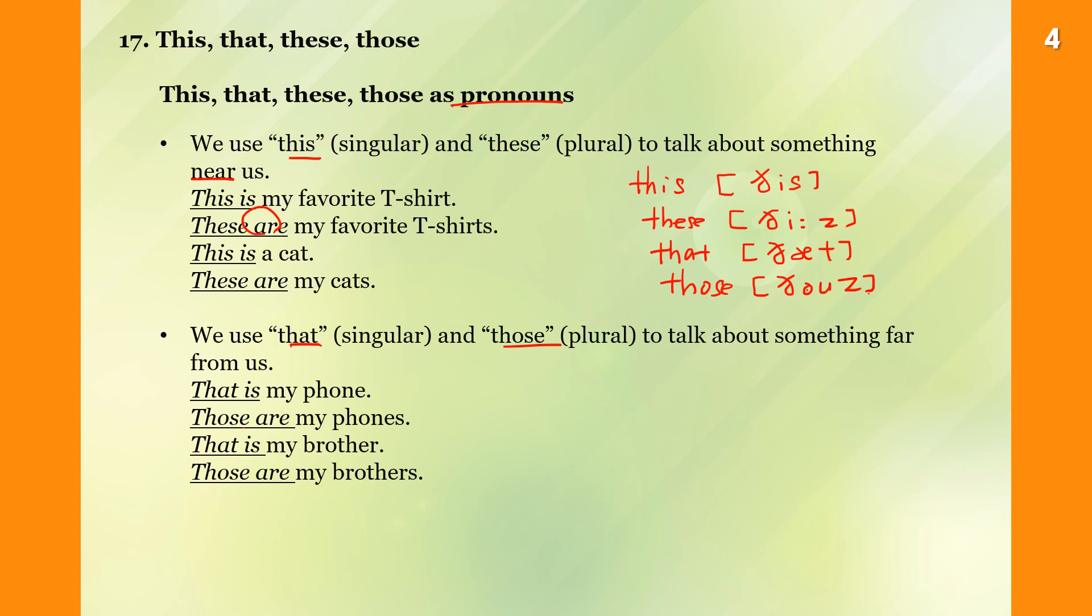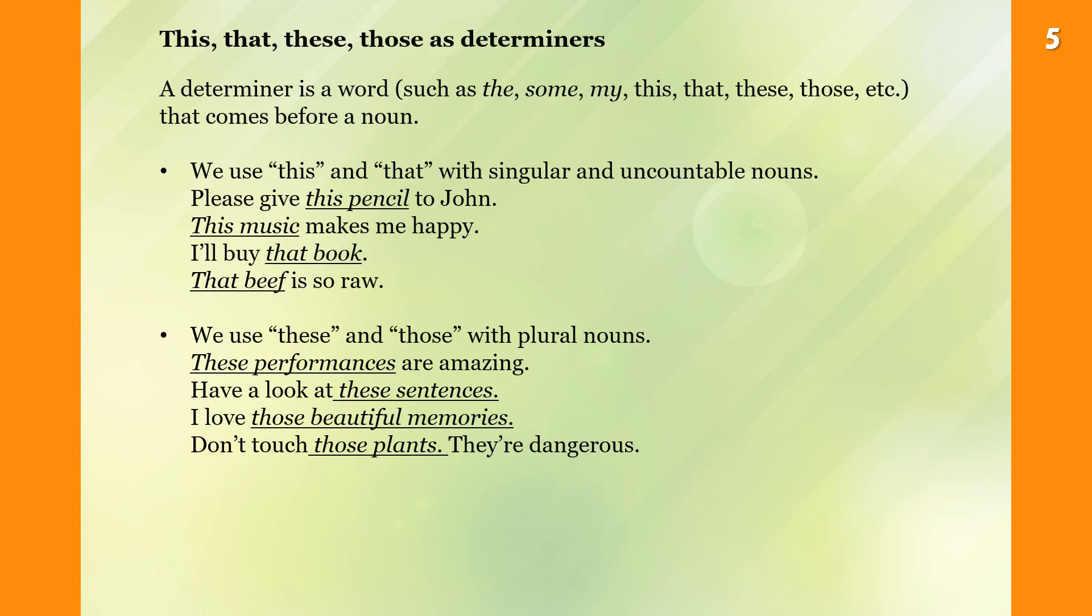Those. Now this one, these are determiners. A determiner is a word such as the, some, my, this, that, etc. that comes before a noun. We use this and that with singular and uncountable nouns. Please give this pencil to John. This music makes me happy. I'll buy that book. That beef is so raw.